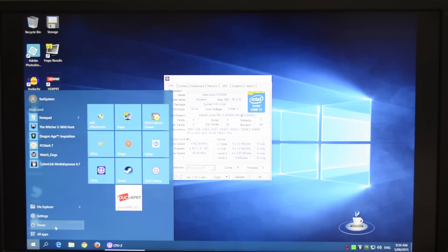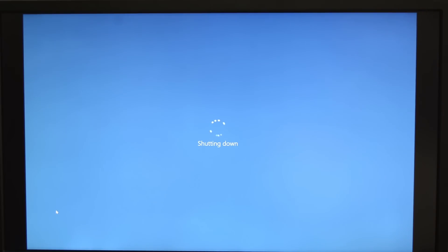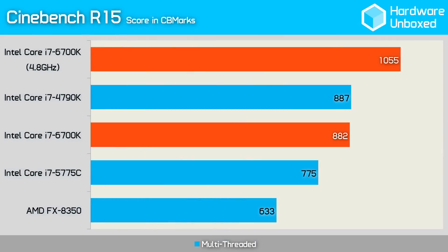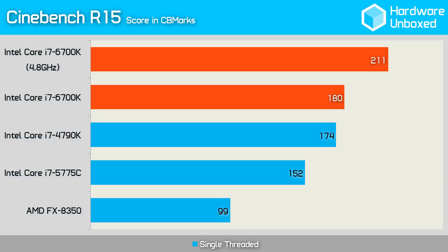And that's it — let's move on to the proper benchmark results. First up we re-tested with Cinebench's multi-threaded test. Originally the 6700K managed 882 CB marks, right on par with its Haswell counterpart the 4790K. Overclocked to 4.8GHz we were able to milk 19.6% more out of the system for a score of 1055 CB marks. Next we ran Cinebench's single-threaded test where the overclocked 6700K was again impressive — at 4.8GHz it scored 17% better than its original clock speed and 21% better than the 4790K.